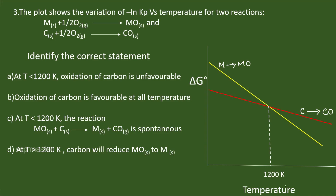Question 3: The plot shows variation of −ln Kp versus temperature for two reactions — metal plus oxygen gives metal oxide, and carbon plus oxygen gives carbon monoxide. −ln Kp is equivalent to ΔG⁰. Below 1200 K, the carbon line is well below the metal oxide line, so carbon can be used as a reducing agent and its oxidation is favorable. Option A states oxidation of carbon is unfavorable below 1200 K — this is wrong. Option B states oxidation is favorable at all temperatures — also wrong, since above 1200 K carbon cannot act as a reducing agent. The correct answer is option C: at T < 1200 K, MO + C → M + CO is spontaneous.